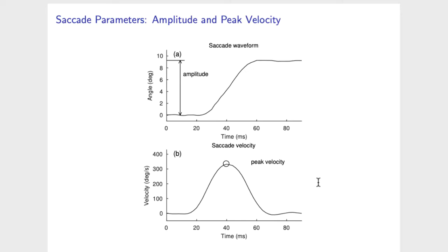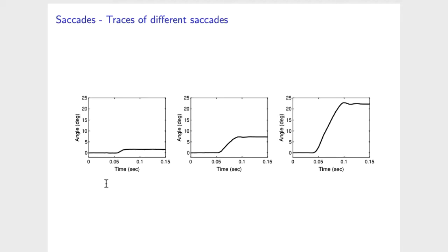Here are three saccades made by the same person: a small saccade, a medium saccade, and a larger saccade. Here the eye moves just a few degrees, here the eye moves about eight degrees, and here the eye moves about 22 degrees.